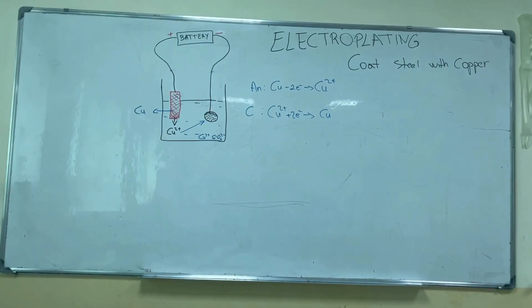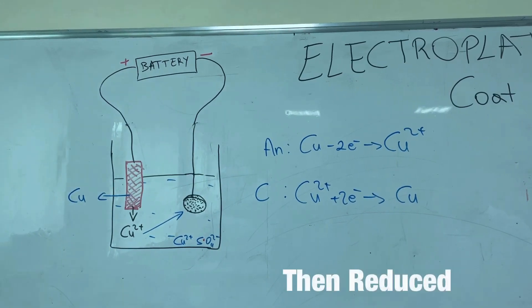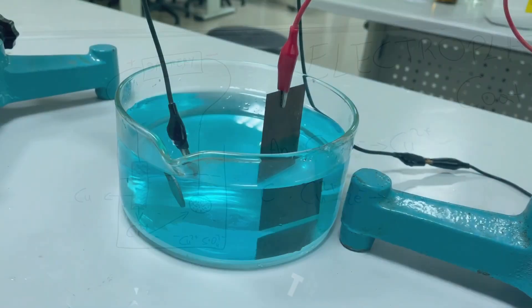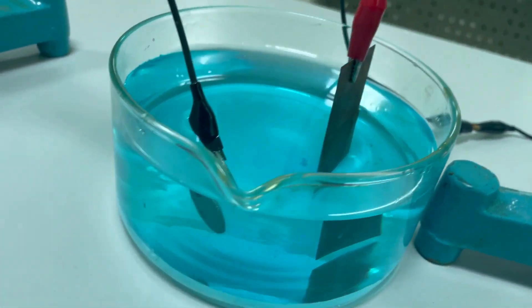Now we are going to coat steel with copper by electroplating process. In this experiment we need a copper sulfate solution, a copper electrode, and a steel coin electrode.